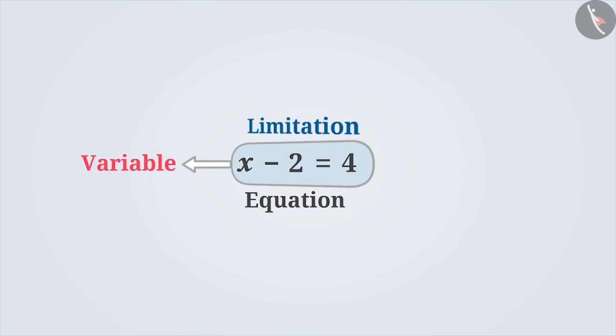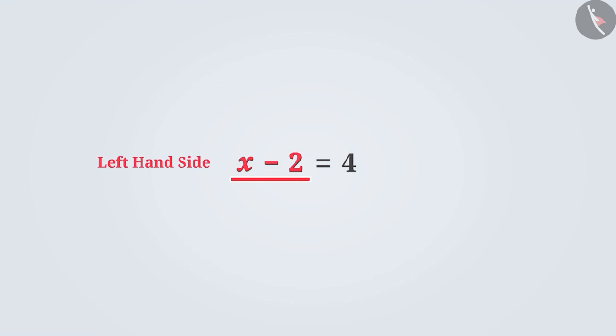So far, we have known that there is a restriction on an equation with a variable. Its left-hand side and right-hand side have equal values which are expressed by the sign of equivalence, i.e., the equal sign.